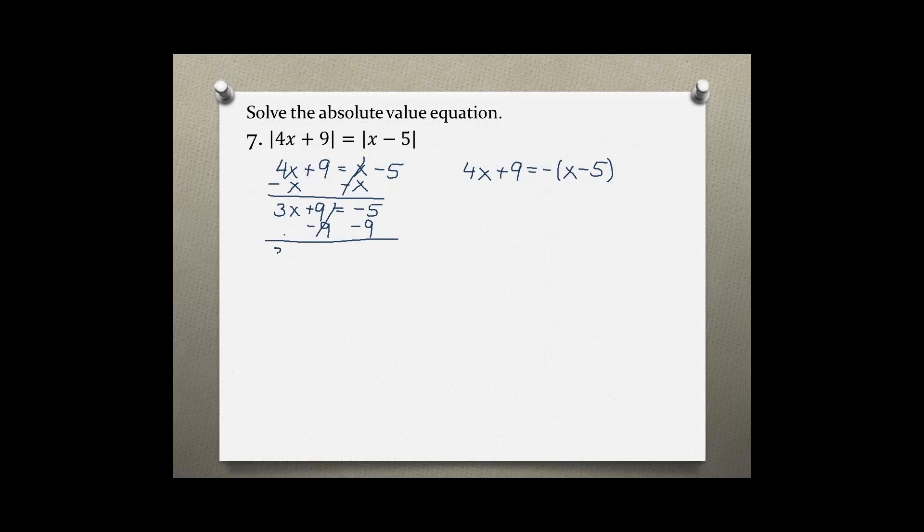Subtracting 9, which leaves us with 3x equals negative 14, and dividing by 3 on both sides leaves us with x equals negative 14 over 3. This is the first solution we get for this absolute value equation.